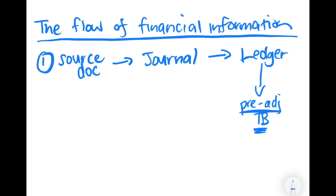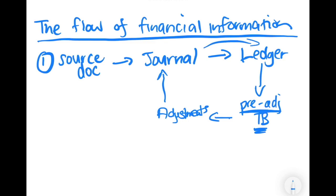We're just going to look at what is currently sitting in all of our accounts. Once we have that pre-adjustment trial balance, we use it to start processing some of our adjustments — because there may be certain non-routine transactions that the business has entered into that are not currently reflected in the accounting system. These adjustments are processed in the form of journal entries, which again get posted to the ledger.